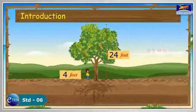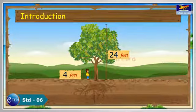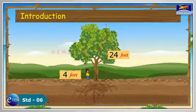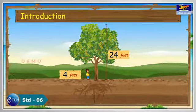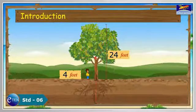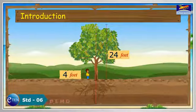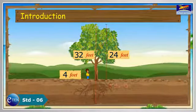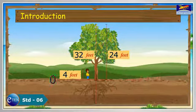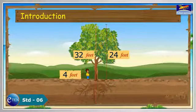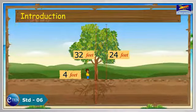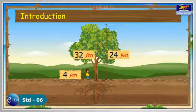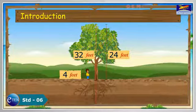Now, if we take the total height of the tree from the tip of the deepest root to the top of the tree, then we can get the actual height of the tree that is 32 feet, considering ground level as zero. The height of the tree above the ground is 24 feet. The roots will grow till minus 8 feet below the ground.